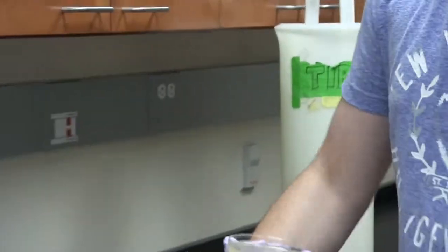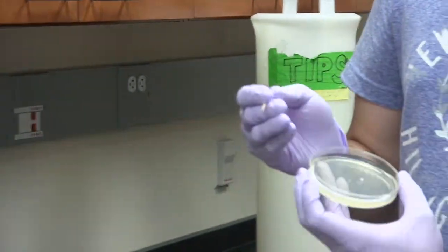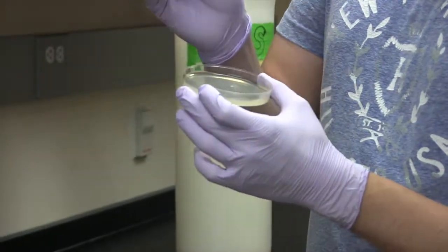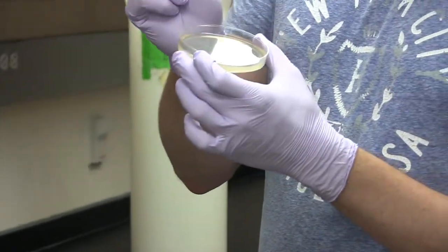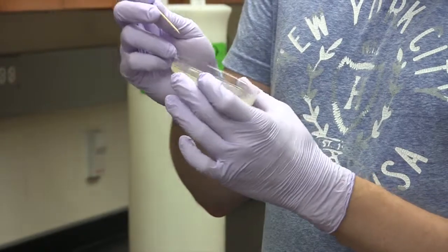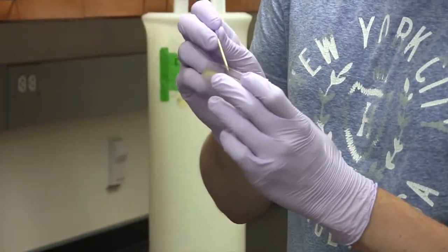And the key here is to find a colony that is well separated, and also you only need to touch the very tip of the colony with the tip of this toothpick. You don't need to just scoop out the whole colony.